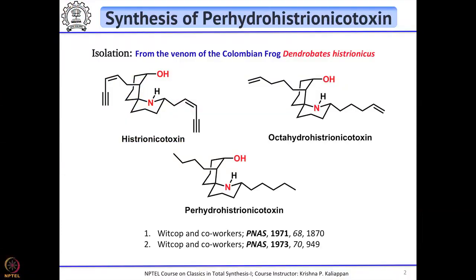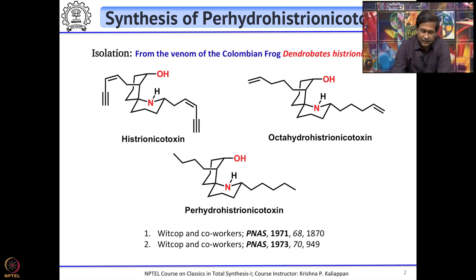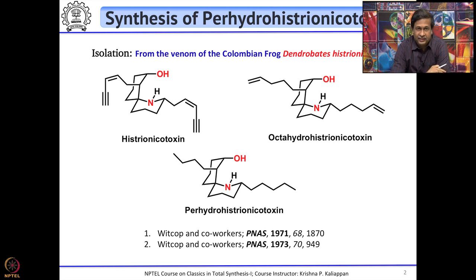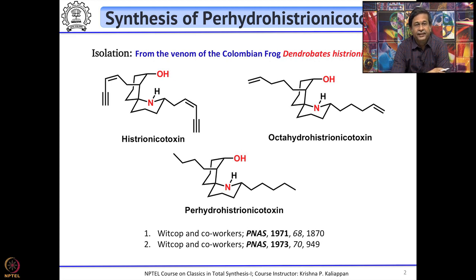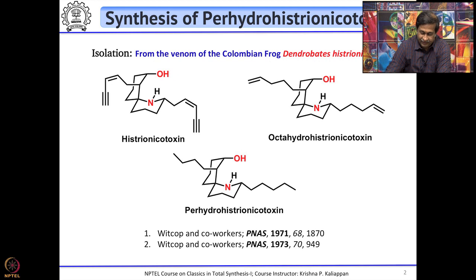There are 3 natural products isolated from the same source. The first one is called estrionicotoxin. Here you can see there are 2 side chains having an E9 (alkynyl) moiety, but the core structure is a spiro-fused system — one 6-membered ring fused with a piperidine ring, with 2 side chains having an E9 moiety.